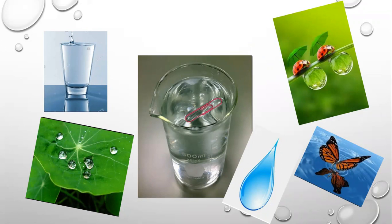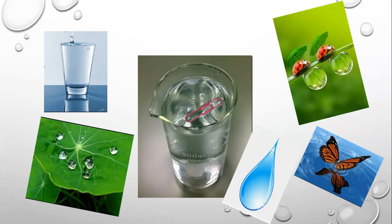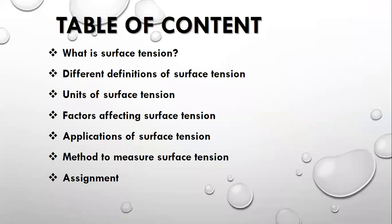Proceeding towards our topic, first of all, we discuss some common daily life experiences. You have noticed a paper clip floating on the surface of the water if placed gently. Raindrops are spherical in shape. Butterflies or insects can easily walk on the surface of water. Similarly, a glass fully filled with water — the water does not come out of the glass. Why do all these phenomena occur? These phenomena are due to a property of a liquid which is called surface tension. We will discuss surface tension today.